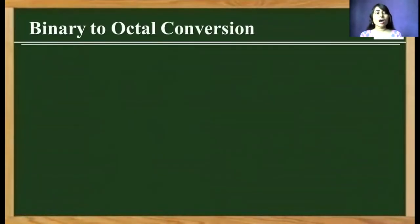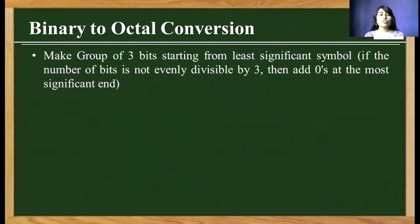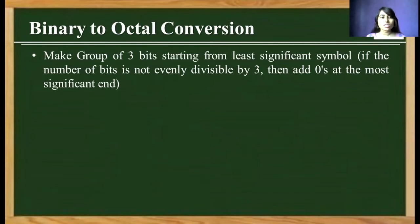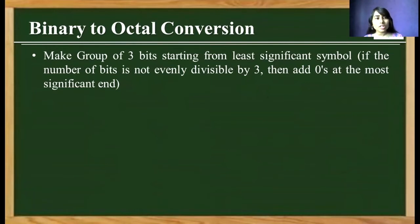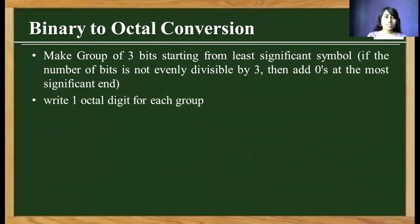First, how binary numbers can be converted into octal numbers. To convert a binary number into an octal number, we have to make a group of 3 bits from least significant bits to most significant bits. Why a group of 3 bits? Because binary has a base of 2 and octal has a base of 8, and 8 is equal to 2 raised to 3. Let's take one example.